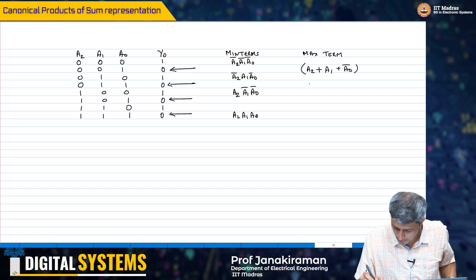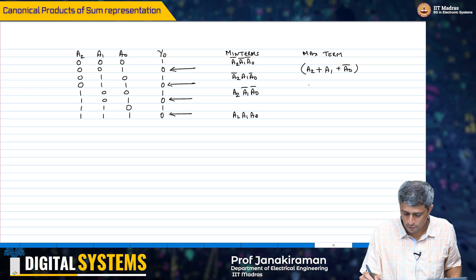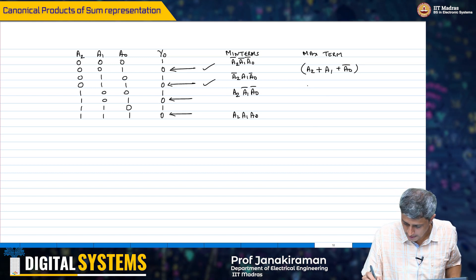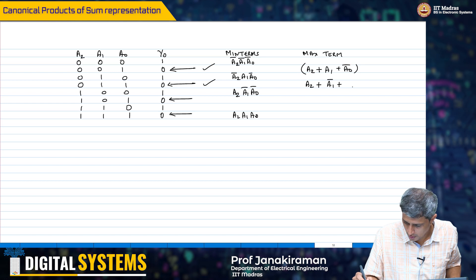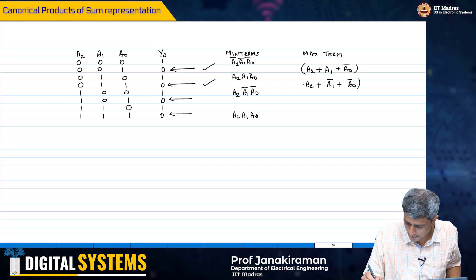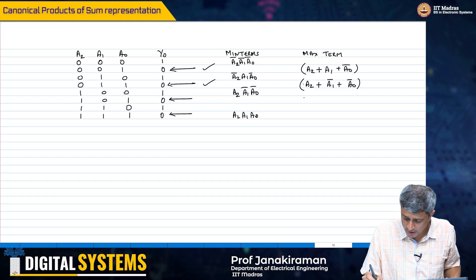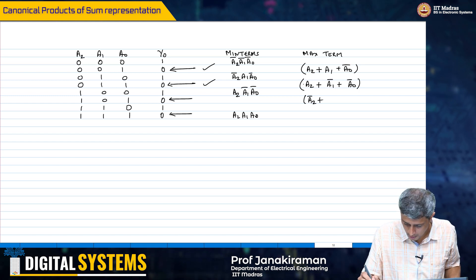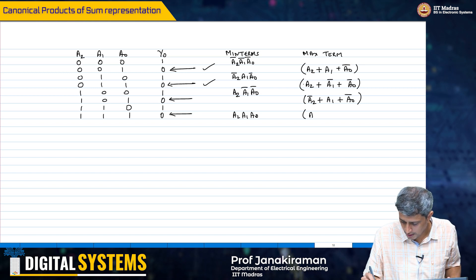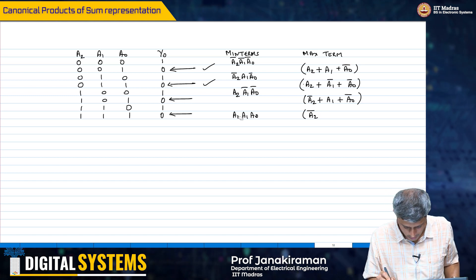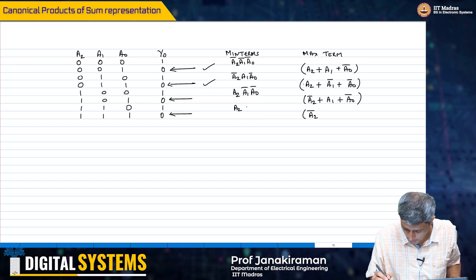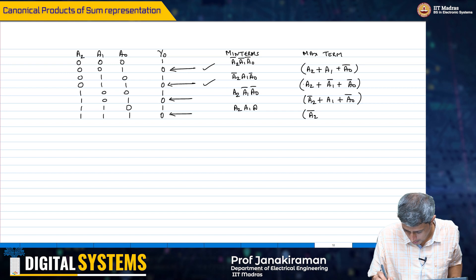Now, similarly for the maxterm, for the next zero we are looking at: it has to be a2 or a1-bar or a-naught-bar. And then we are saying this has to be a2-bar or a1 or a-naught-bar. Finally, this has to be a2, a1, a-naught-bar.